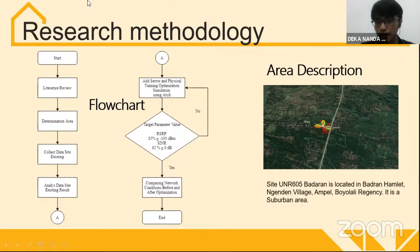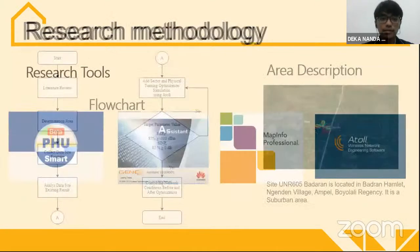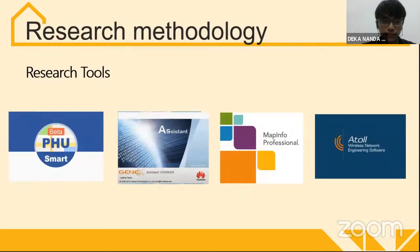On the right side, there is a map of site UNL605 in Bateran. It is located in Bateran Hamlet, Nenden Village, Ampel, Boyolali Regency — a sub-urban area. The research tools used are: PHO Smart Beta software for the drive test, the log file from the drive test is imported into GENEX Assistant for processing, then exported to MapInfo where the log file is visualized by PCI and signal parameters. ATOLL software is used to simulate the add-sector and physical tuning optimization.